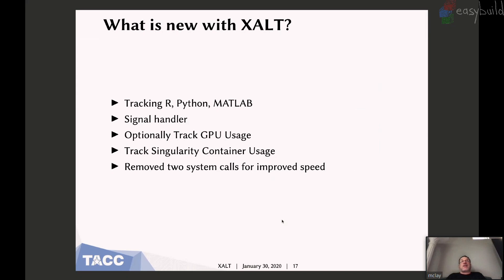I've added a signal handler, which works great for scalar programs — if they terminate with just about anything, that will be captured. I've been working with somebody from the MVAPICH2 team to capture long-running MPI jobs, but that's much harder because you have to pass signals from Slurm through srun or mpiexec to the user's executable. While it works correctly within MVAPICH2, I can't get Intel MPI to pass the terminate signal through. But I've also added, with some help, tracking of Singularity container usage, and I'm reducing the number of system calls to improve the speed of Exalt.